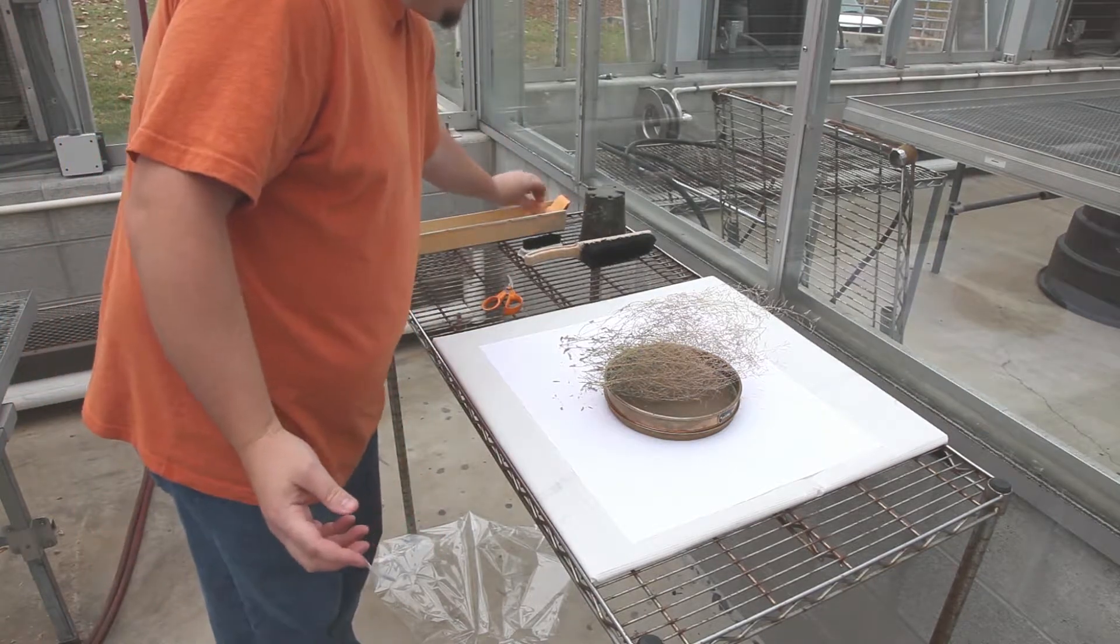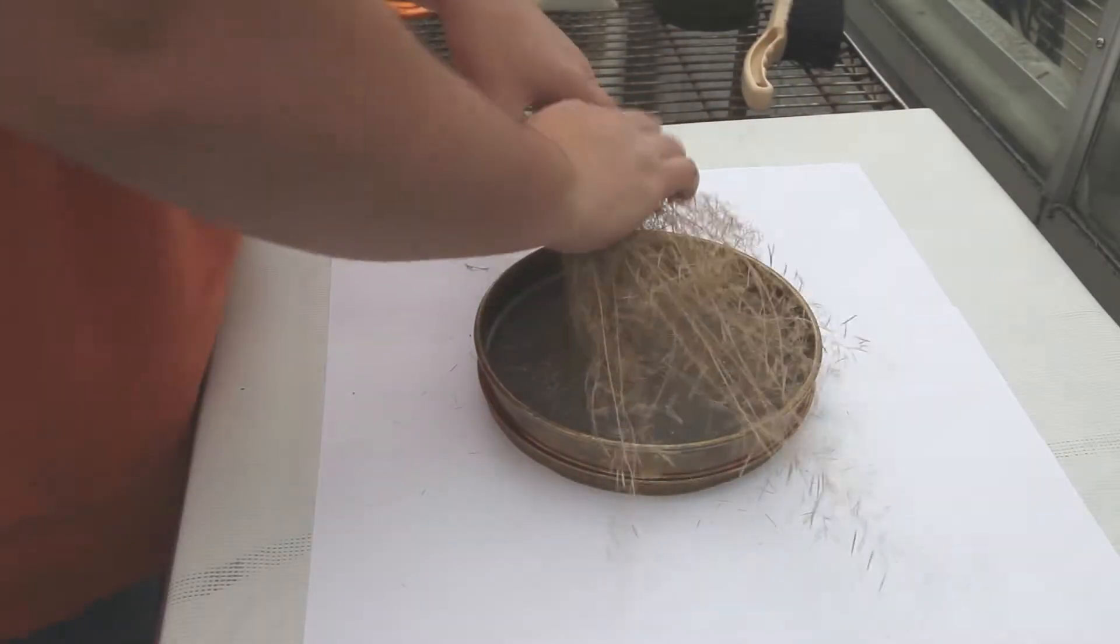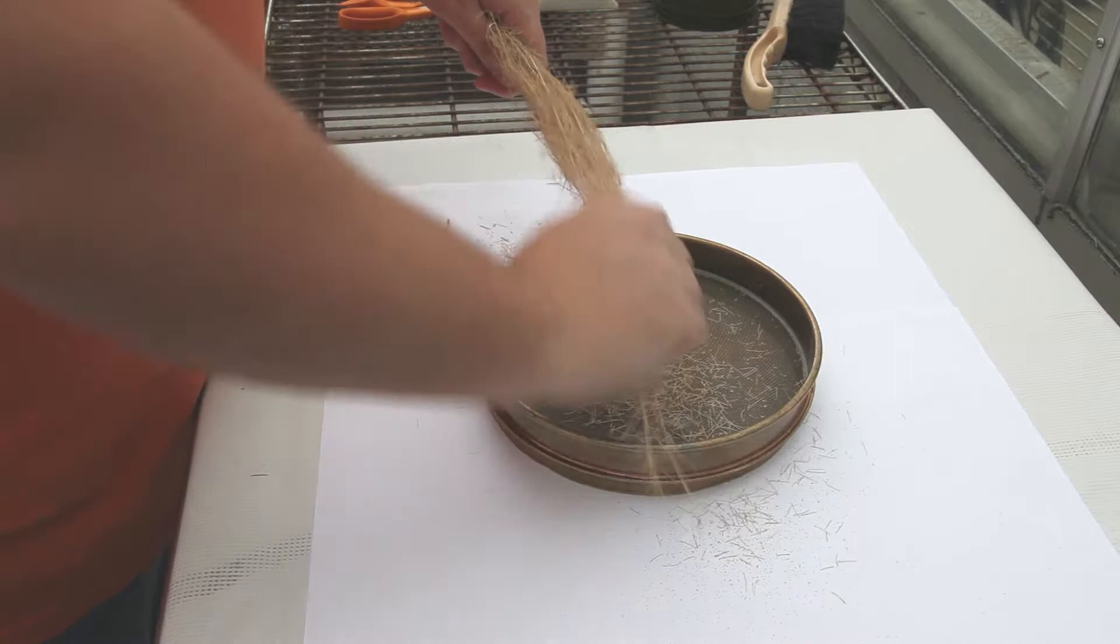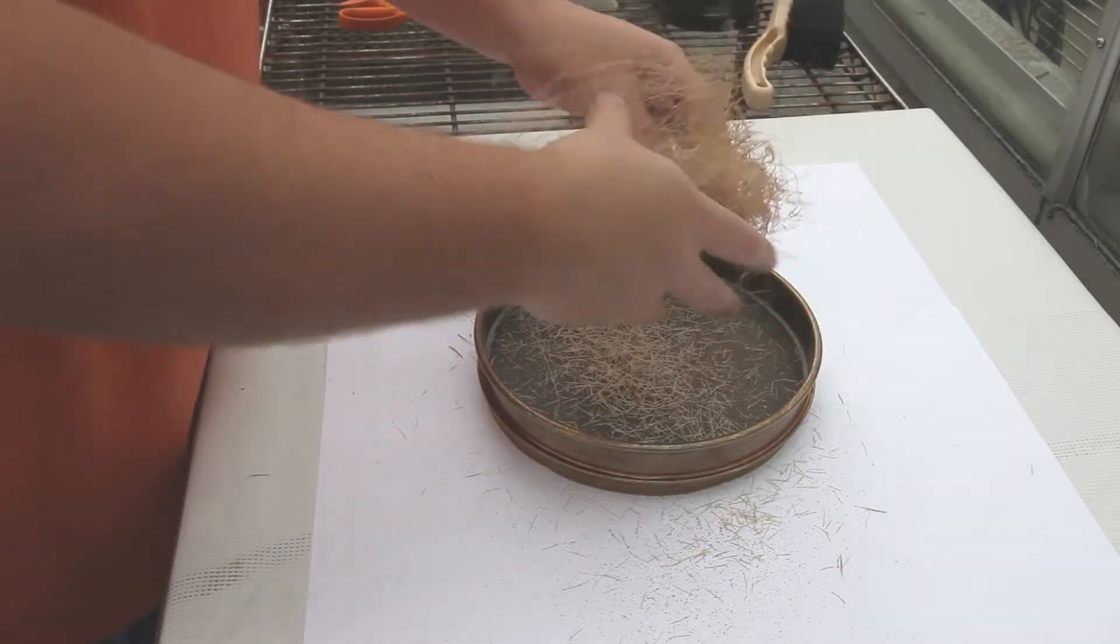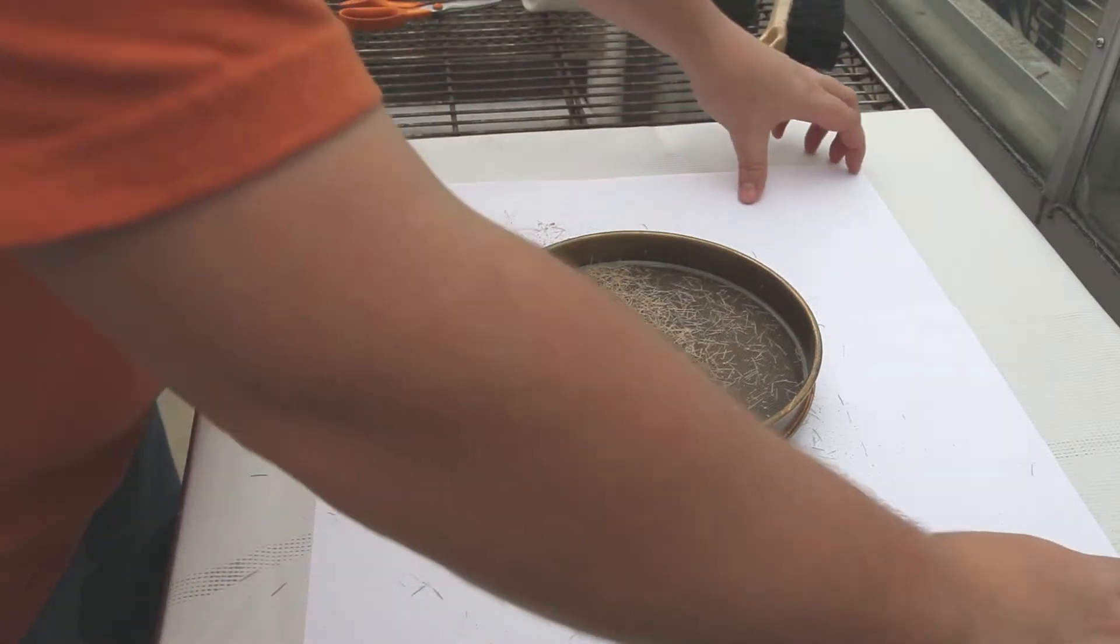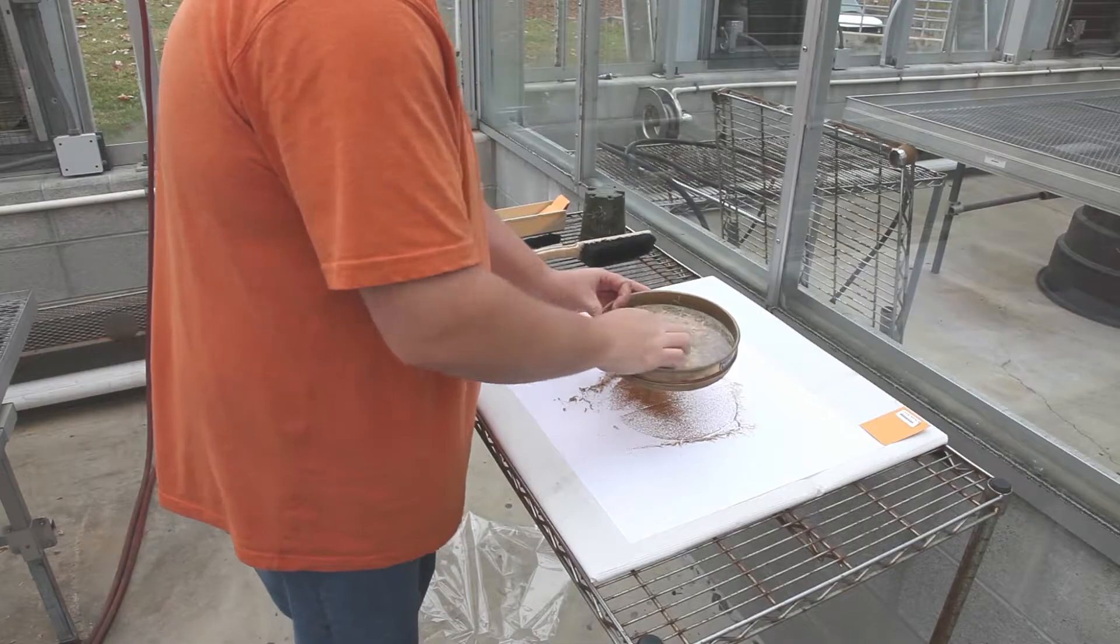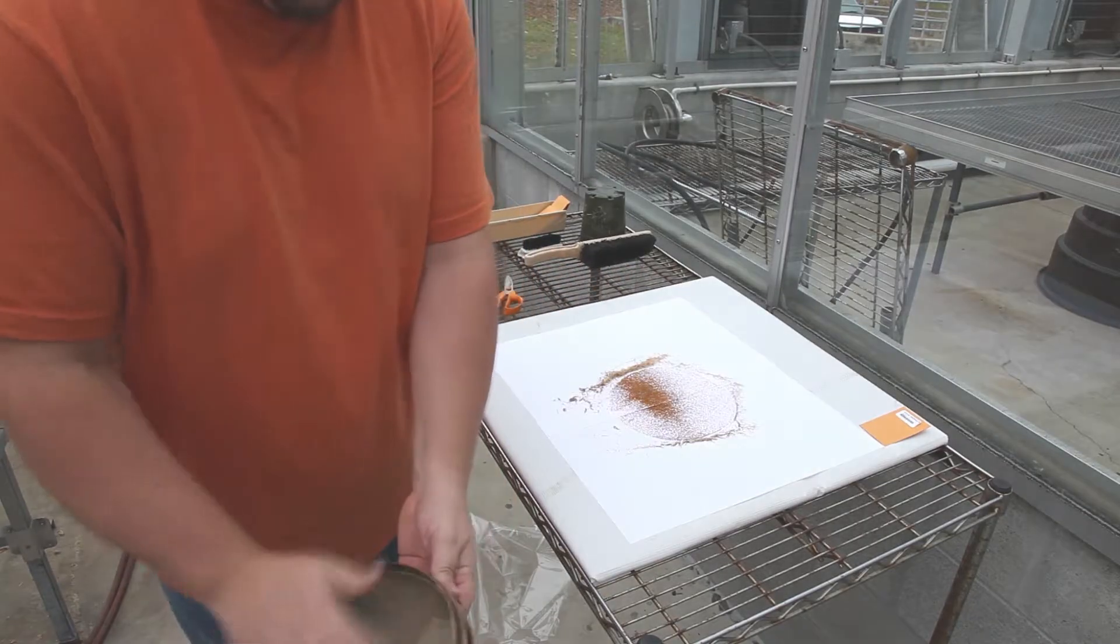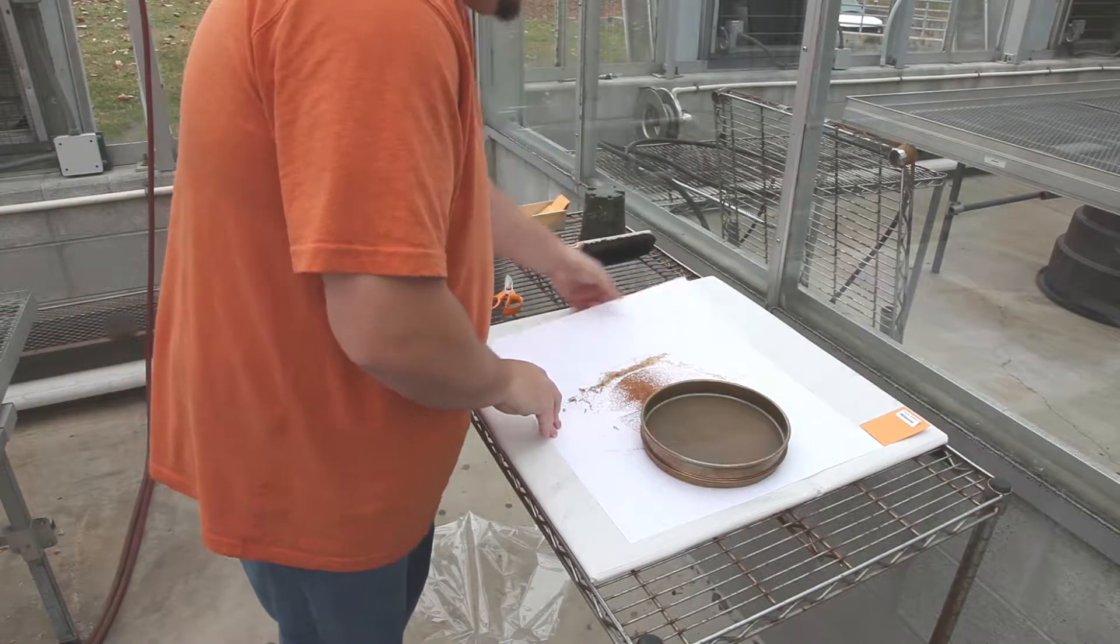Transfer the label from the pot to the envelope in which the seeds will be placed. Use your hands to gently crush the plant material in the sieve. Discard the plant material that collects in the sieve and keep the seeds and smaller plant material that fall through.